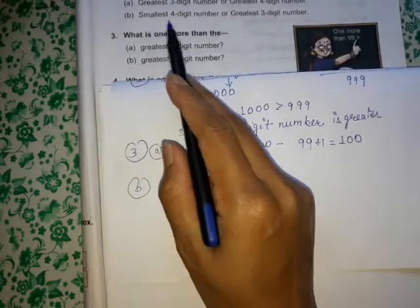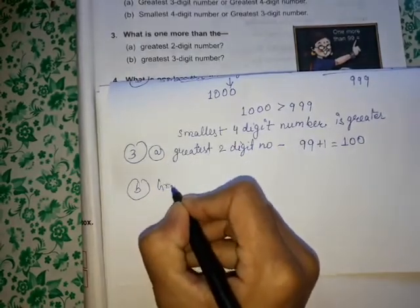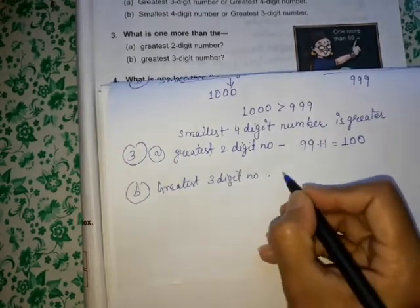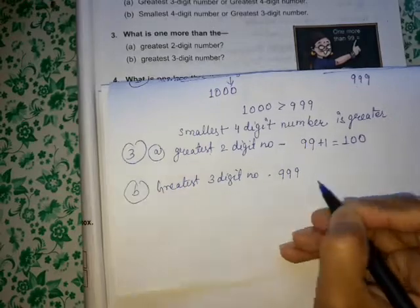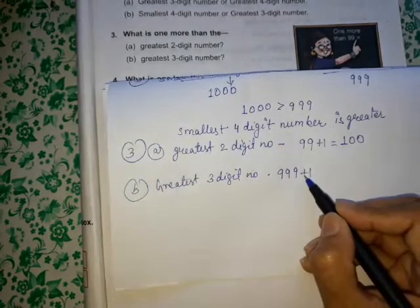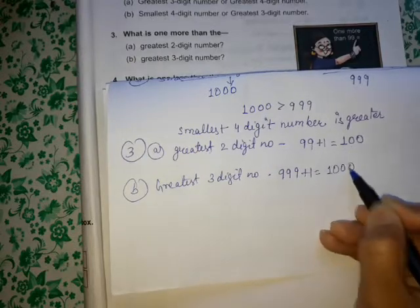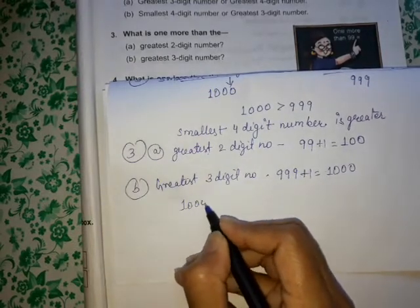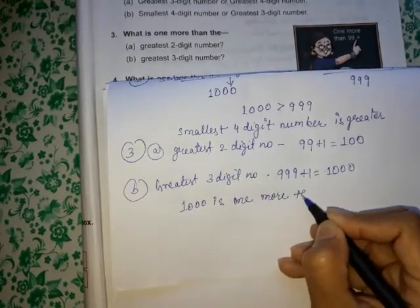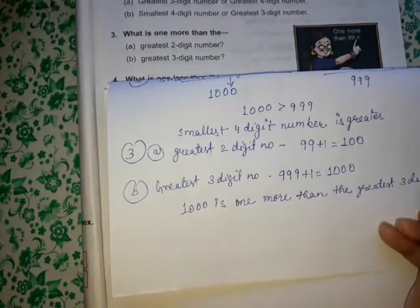Part B: one more than the greatest three digit number. The greatest three digit number is 999. When we add plus 1 in 999, we get 1000. So 1000 is one more than the greatest three digit number.